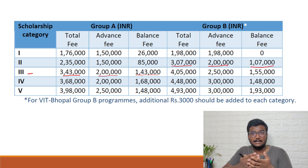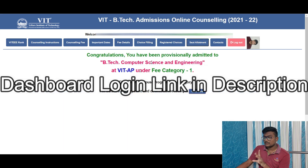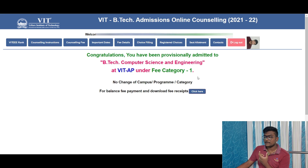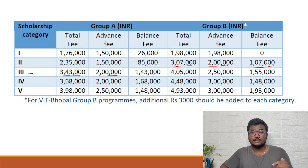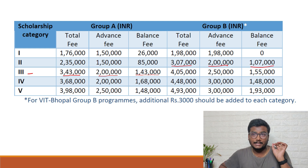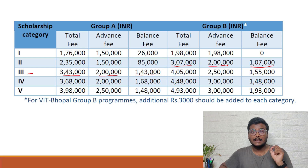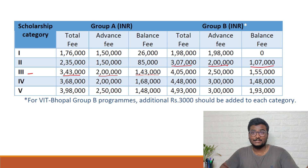I'll add a short clip to help you understand how to pay the advance fee. On the seat allotment page you'll see a congratulations message — for example, 'You have been provisionally admitted to B.Tech CSC at VIT AP under Category 1.' No changes of campus or program will be entertained. To pay the fee, just click the payment button shown there. Please also share the Google form with all friends who participated in VIT VITEEE 2022 Phase 3 counseling.